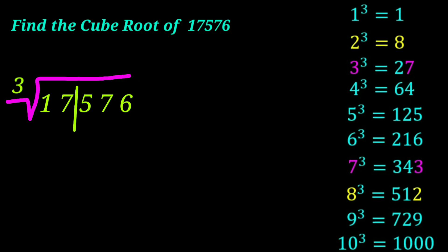Check the last digit of 17,576. That is six. Now check the cube number ends with six that corresponds to the number six. Write six and ignore the last three digits of the given number.